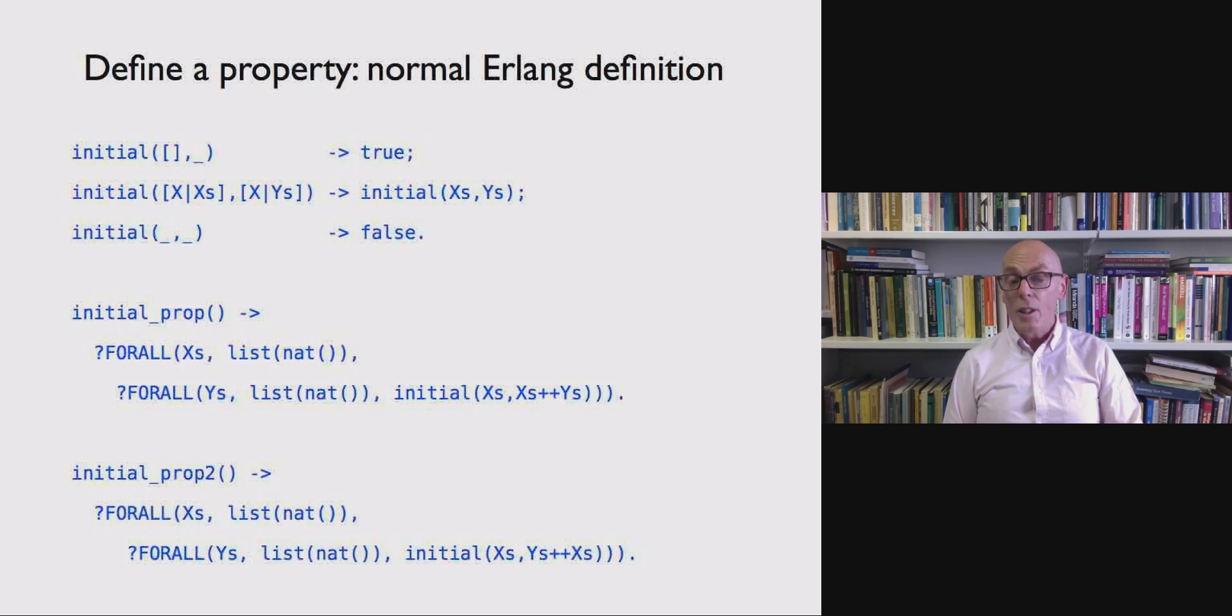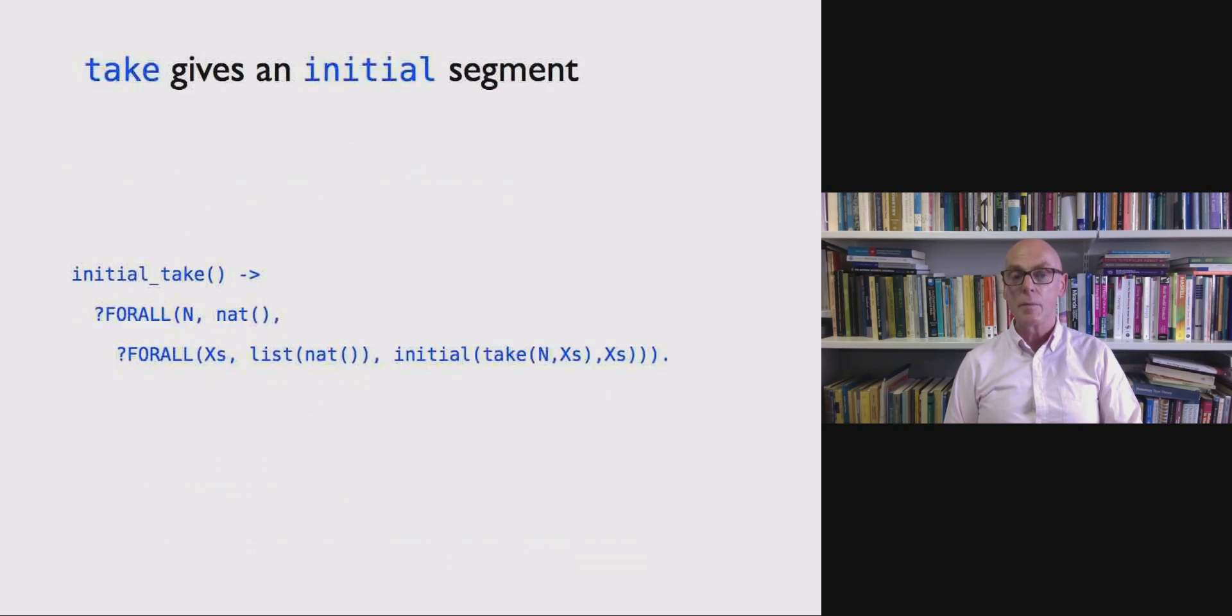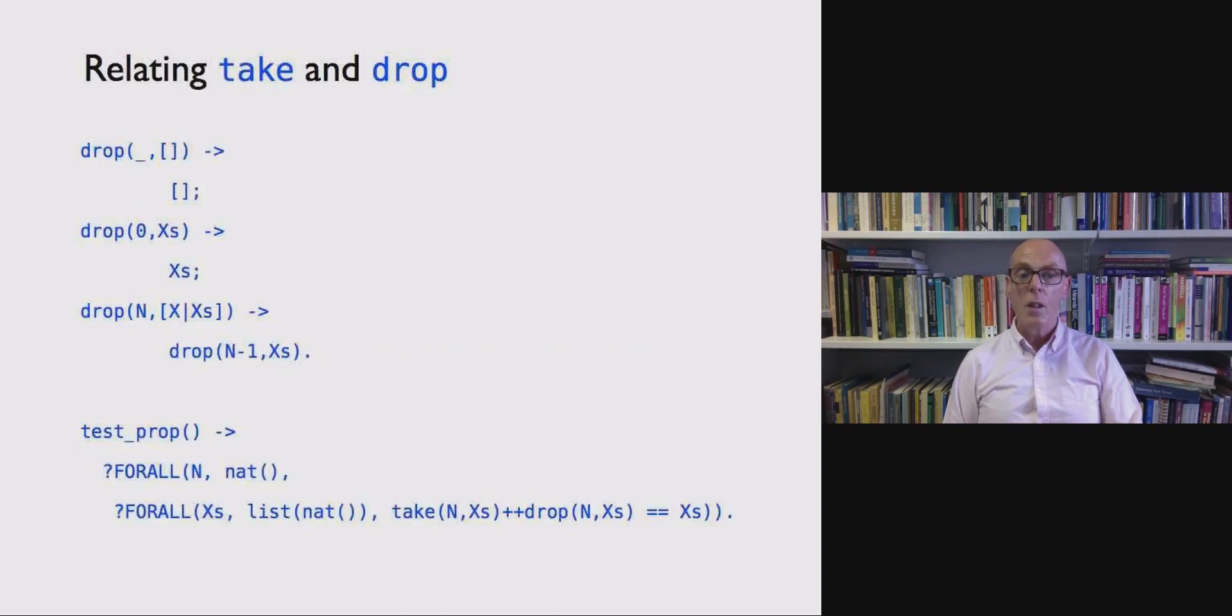And then you can, we've got two properties here. We'd certainly expect the first property, initial prop to be true. We'd expect X's always to be an initial segment of X's plus plus Y's. But if you try out initial property 2, you'll see that doesn't hold. X's is not an initial segment of Y's plus plus X's. But one of the nice things we can do is once we've defined initial, we can say that take N X's is an initial segment of X's itself. And we would expect that property to be true and indeed it is.